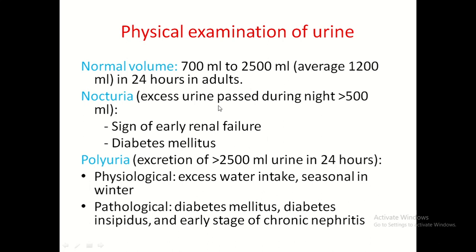Nocturia is excess urine passed during night, especially greater than 500 ml. Causes include early renal failure and diabetes mellitus. Polyuria is excretion of more than 2500 ml of urine in 24 hours. Physiological causes include excess water intake and seasonal factors, especially in winter. Pathological causes include diabetes mellitus, diabetes insipidus, and early stage of chronic nephritis.